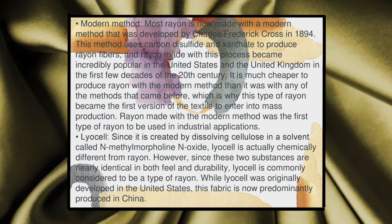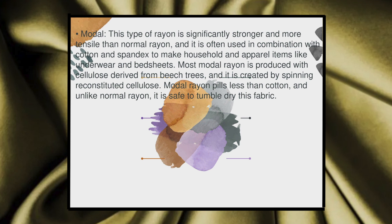Lyocell is actually chemically different from rayon. However, since these two substances are nearly identical in both feel and durability, lyocell is commonly considered to be a type of rayon. While lyocell was originally developed in the United States, this fabric is now predominantly produced in China. Modal is another type of rayon that is significantly stronger and more tensile than normal rayon. It is often used in combination with cotton and spandex to make household and apparel items like underwear and bed sheets. Most modal rayon is produced with cellulose derived from beech trees and is created by spinning reconstituted cellulose. Modal rayon pills less than cotton and, unlike normal rayon, it is safe to tumble dry.